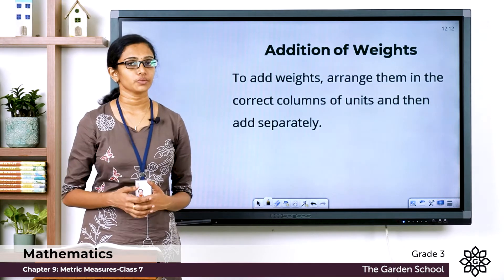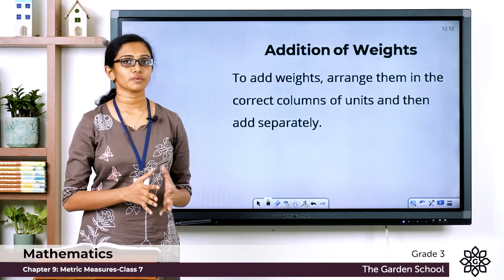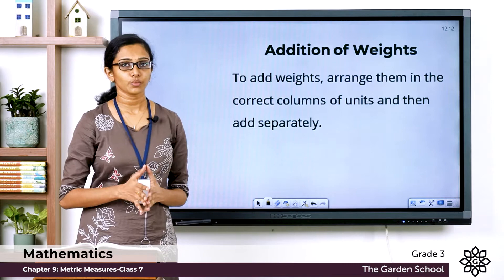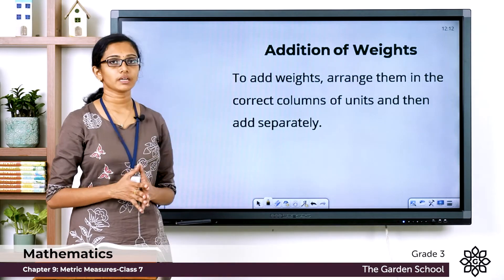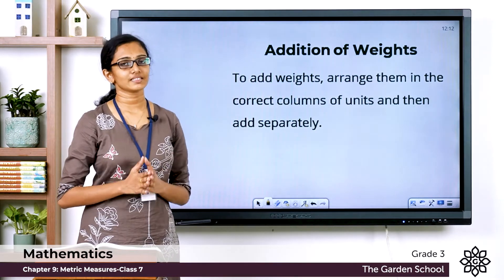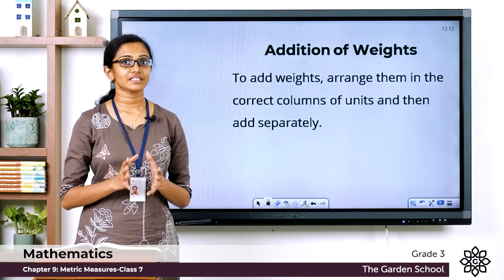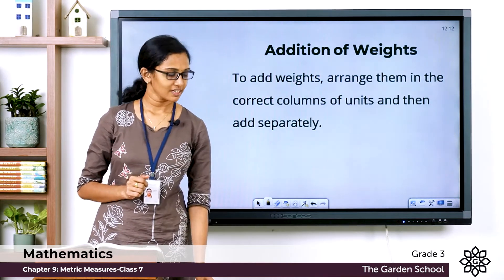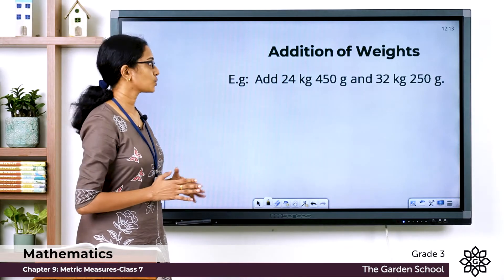So to add weights, what do we do? Just like in the case of measurements of length, to add weights: first arrange them in the correct columns of units, and then add separately. Let's see that with examples. The first question is: add...